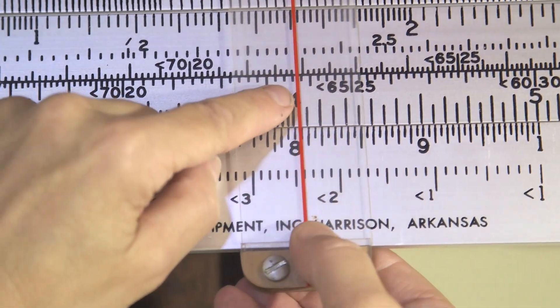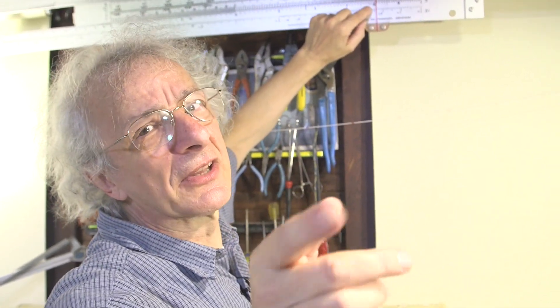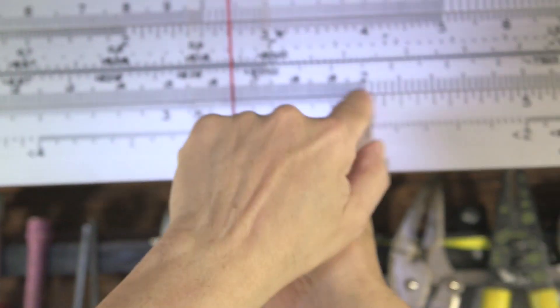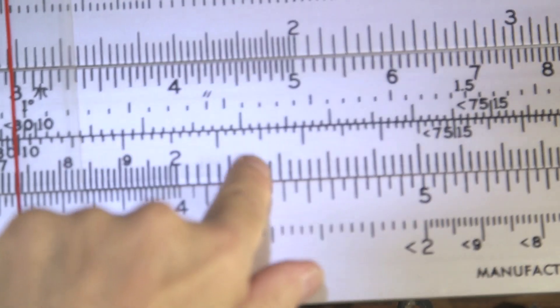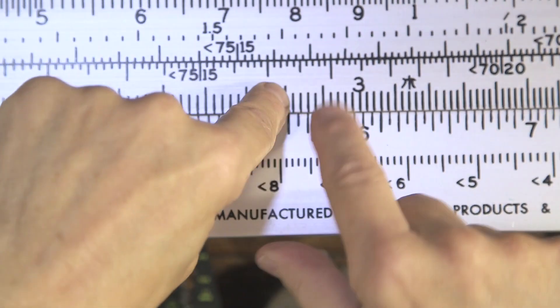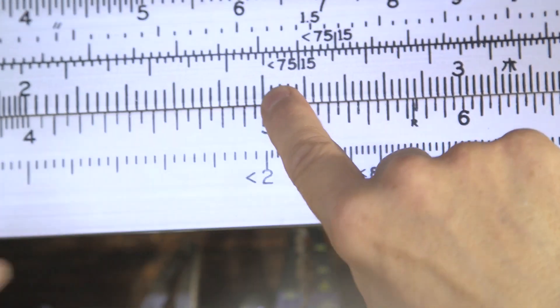2 times 4 is 8. Okay, no surprise there. And we can now go in between numbers. Let's try something a little bit more cool. 2 times 2.1, 2.2, 2.3, 2.4, 2.5, 2.6, 2.7, 2.8, 2.93.